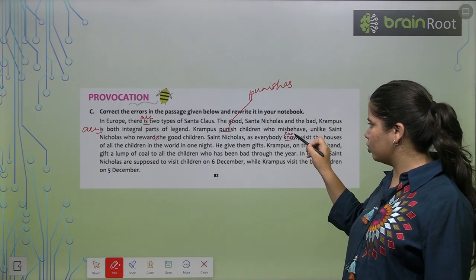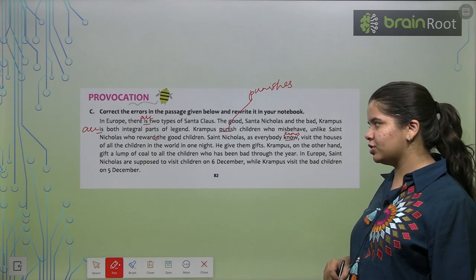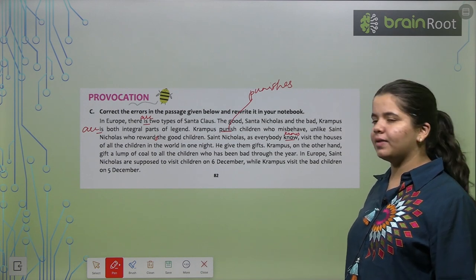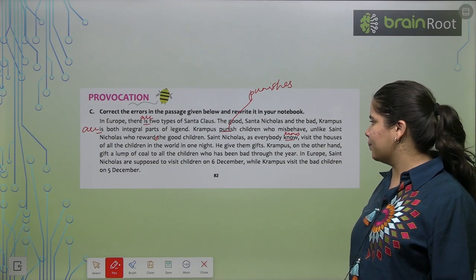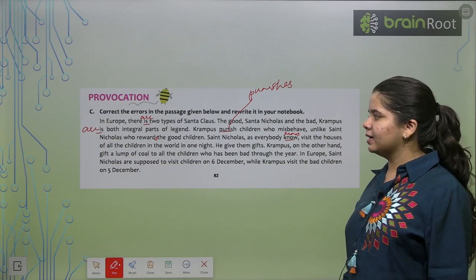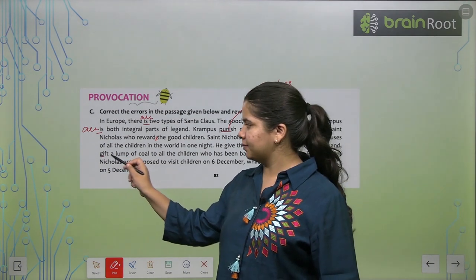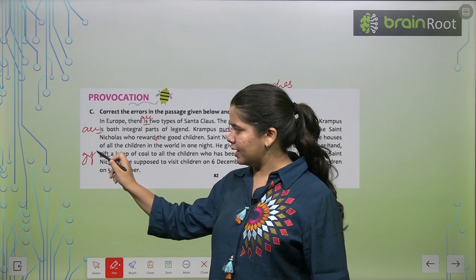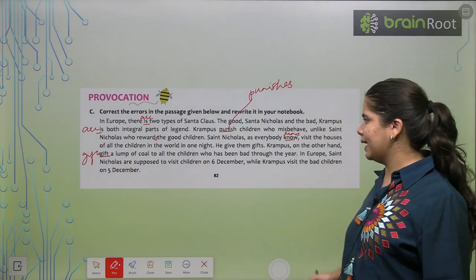Saint Nicholas as everybody knows. K-N-O-W-S. Visits the houses of all the children in the world in one night. He gave them gifts. Krampus on the other hand gifts a lump of coal to all the children. So, yahan pe gifts aayega. G-I-F-T-S.